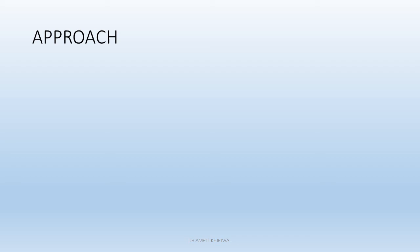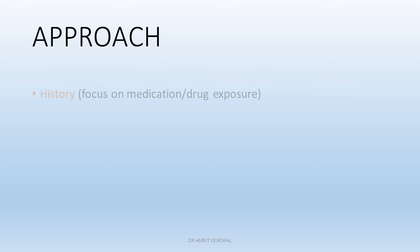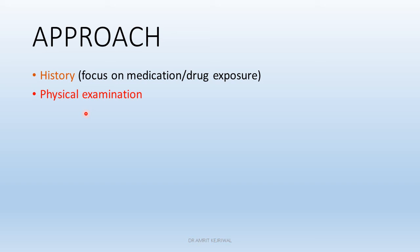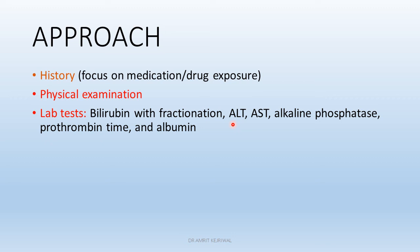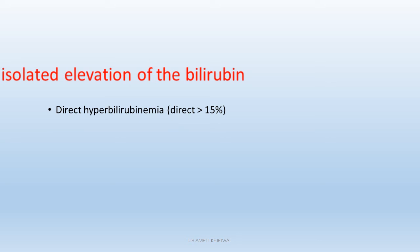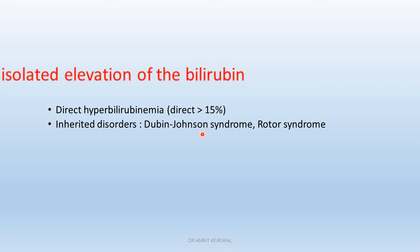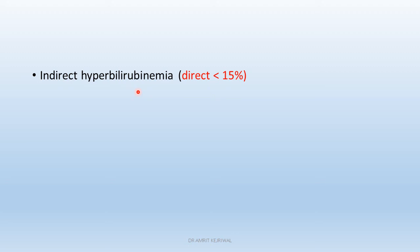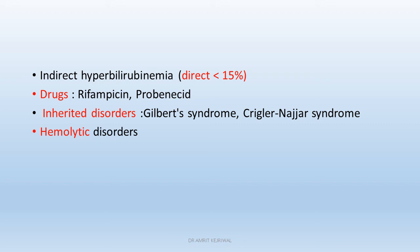When a patient presents, after detailed history and examination, do the lab tests: bilirubin fractionation, liver enzymes, alkaline phosphatase, prothrombin time, and albumin. This will determine if there is isolated hyperbilirubinemia or if other liver function tests are also deranged. If there is isolated elevation of bilirubin — with direct hyperbilirubinemia greater than 15% — it is probably an inherited condition such as Dubin-Johnson or Rotor syndrome. With direct hyperbilirubinemia less than 15%, consider drugs such as rifampicin or probenecid, inherited disorders such as Gilbert's and Crigler-Najjar, hemolytic disorders, or ineffective erythropoiesis.